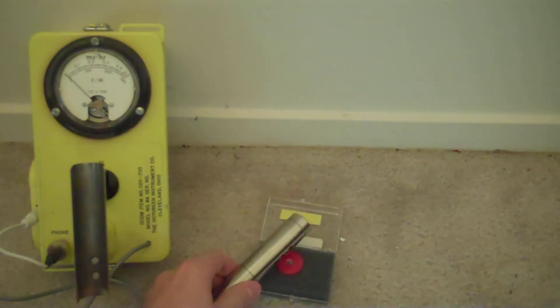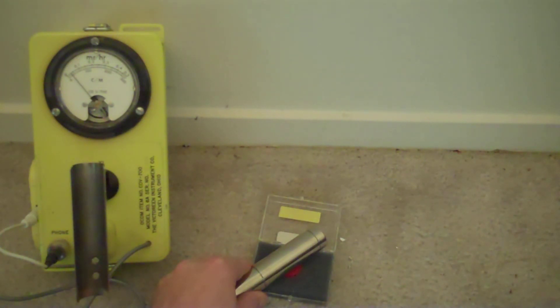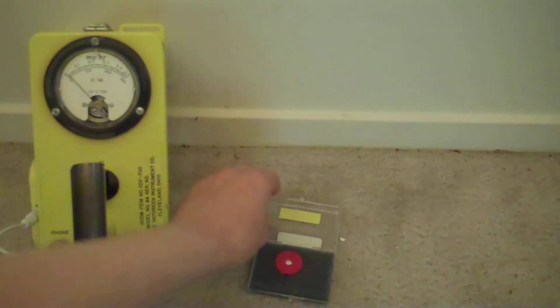Examining the polonium-2 source, as you can expect, nothing is detected. This unit is NOT sensitive to alpha radiation. It can only detect gamma, beta, and perhaps weak x-rays.